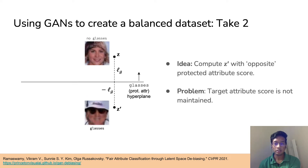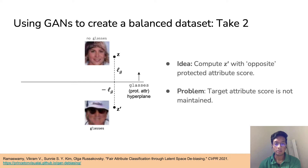The second idea is to use pairs of images instead. After learning the glasses hyperplane, we can compute a vector Z prime that flips the glasses score, giving us pairs of images — one with glasses and one without. The issue, however, is that we have no control over whether the image generated from Z prime has a hat. In fact, naively perturbing latent vectors in this way can maintain biases — for example, when adding glasses, we can also inadvertently add a hat.